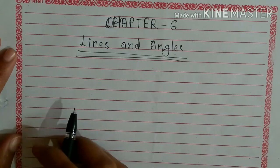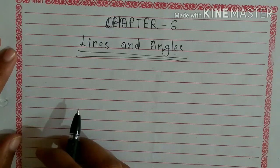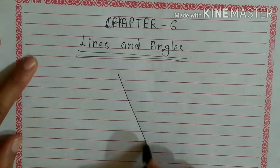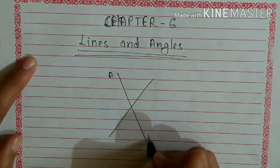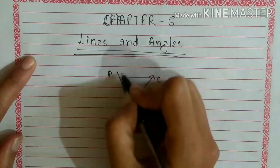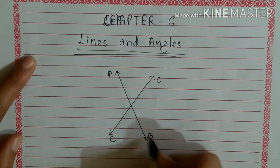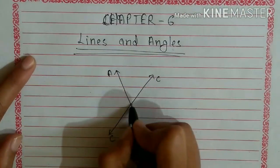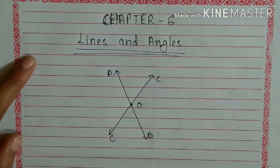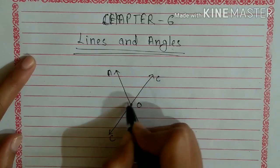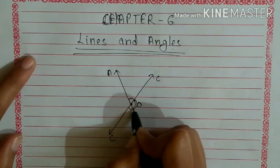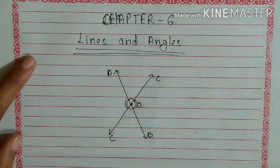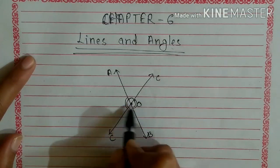When two straight lines AB and CD intersect each other at point O, the vertically opposite angles are formed. There are two pairs of vertically opposite angles.